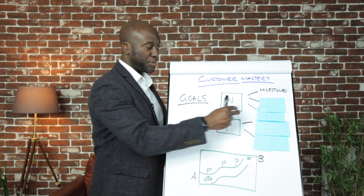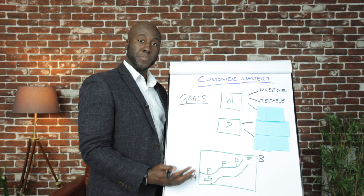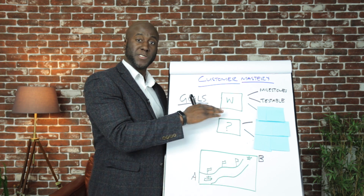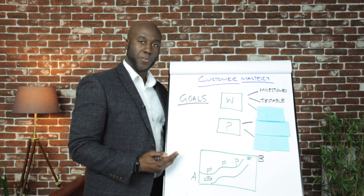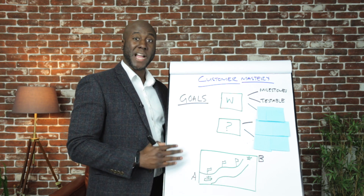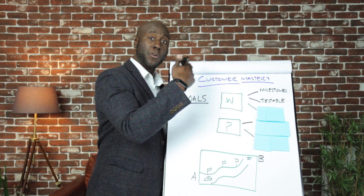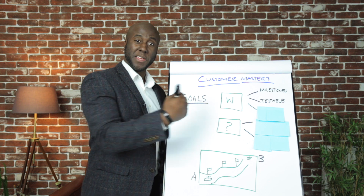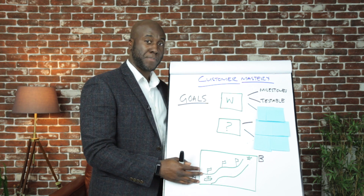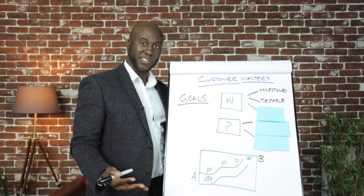That leads us to point number two: every goal needs to be testable, meaning at each point we need to be able to assess the power and quality of that specific goal and whether it really achieves the things that we want. A question to ask when formulating goals is: if this specific goal were removed, would it impact the quality of getting to the outcome, or how quickly we get to the result? If removing it wouldn't impact much at all, then it probably isn't the right goal to chase. So it needs to be testable.